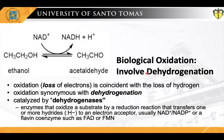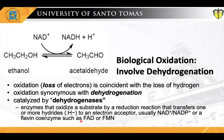Most of the time, oxidation or the loss of electrons is coincident with the loss of hydrogen. In biological systems, oxidation is often synonymous with dehydrogenation, and many enzymes that catalyze oxidation reactions are termed dehydrogenases. The more reduced compounds are richer in hydrogen — for example, alcohol — whereas the more oxidized compounds, such as acetaldehyde, have less hydrogen. Dehydrogenation or oxidation-reduction reactions are catalyzed by oxidoreductases or dehydrogenases. These are enzymes that oxidize a substrate by a reduction reaction that transfers one or more hydrides to an electron acceptor, usually NAD or NADP, or a flavin coenzyme such as FAD or FMN.